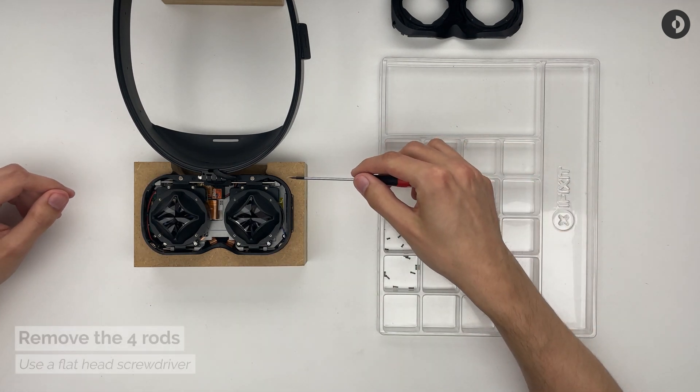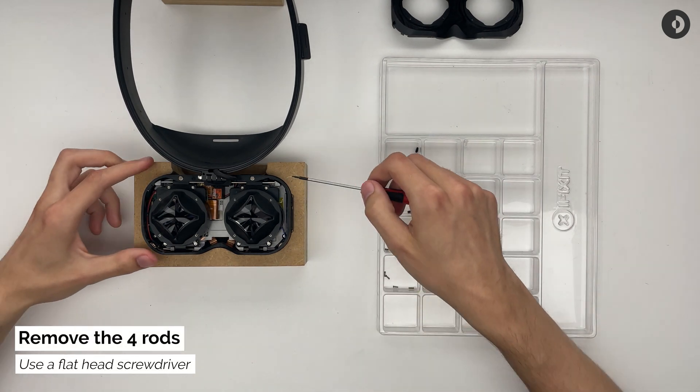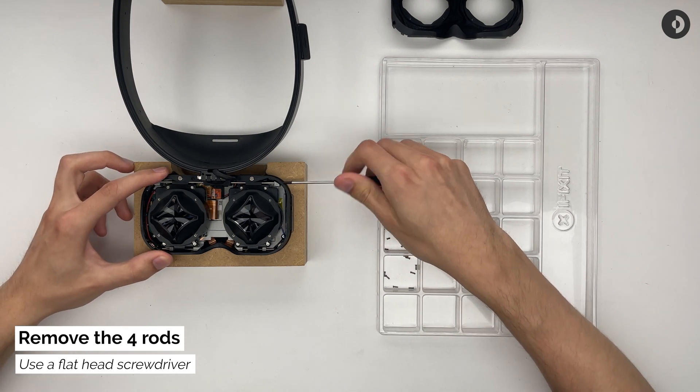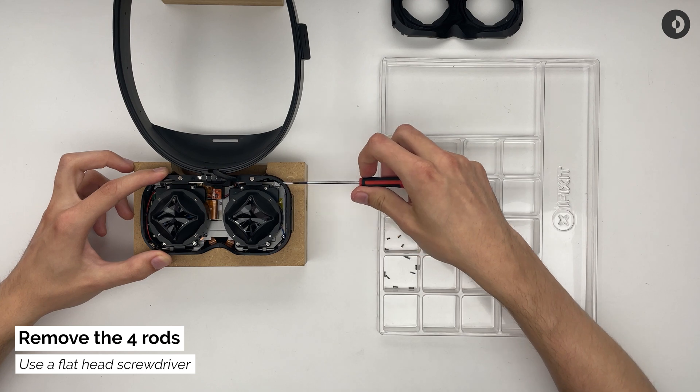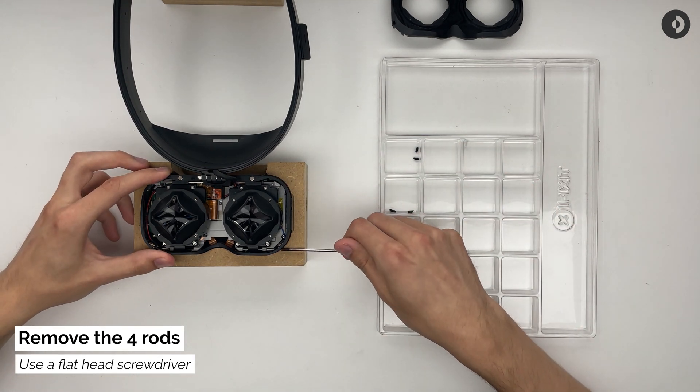Underneath these rubber covers, you will find the rods, which you can unscrew with a small flat head screwdriver. Once again, make sure you store them in pairs, as the top rods are longer than the rods at the bottom. Once unscrewed from the main skeleton, you can slide them out.